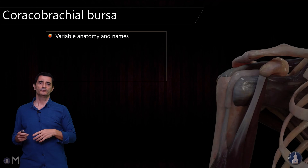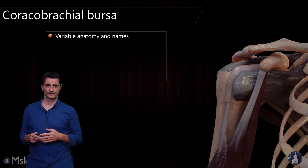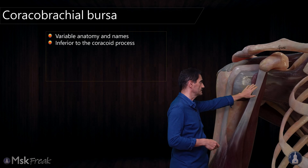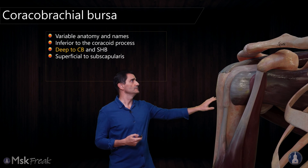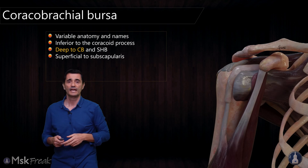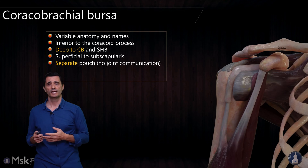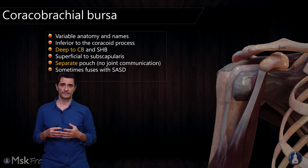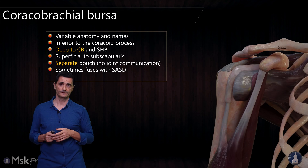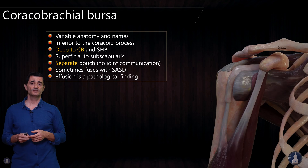What about the coracobrachial bursa? The coracobrachial bursa has variable anatomy and names. The most common name is the coracobrachial bursa. It will be located inferior to the coracoid process, and deep to the coracobrachialis muscle and the short head of the biceps — deep to these two structures and superficial to the subscapularis. Usually it's a separate pouch with no joint communication. Sometimes it fuses with the subacromial-subdeltoid bursa, so if you see the subacromial-subdeltoid bursa going deep to the coracobrachialis, that is the fusion between both bursae. In normal conditions there is no fluid, so usually you shouldn't see this bursa — if you find it, it's because it is pathologic.